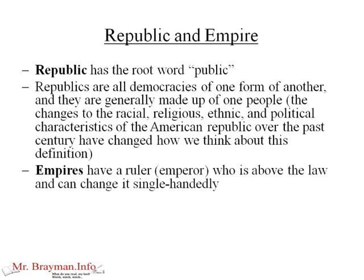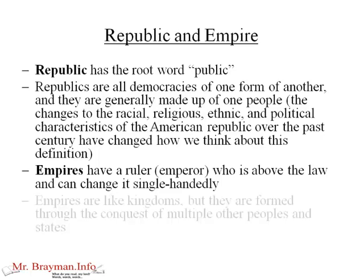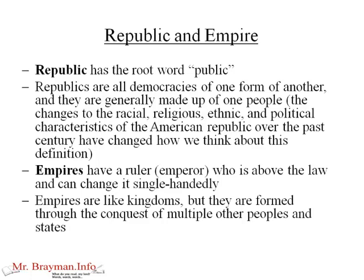Empires have a ruler who's an emperor who's above the law and who can change it single-handedly. Empires are like kingdoms, but they're formed through the conquest of multiple other peoples and states. You get a mix of ethnic groups, a mix of religions — the people don't necessarily look the same or speak the same language. We may have a conversation in this unit about whether the United States has become an empire as it has become more multicultural and taken over more different groups of people.